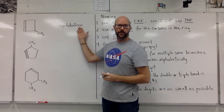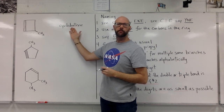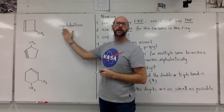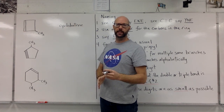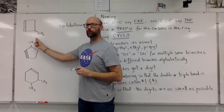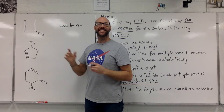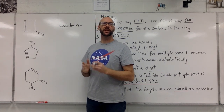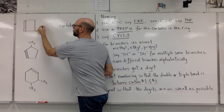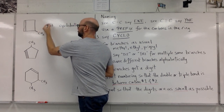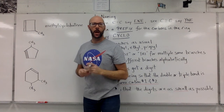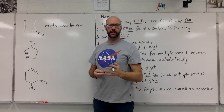That square with the double bond in it is cyclobutene — 'ene' because of the double bond, 'bute' because it's four carbons in the ring, and 'cyclo' because it makes a loop. Now this is a one-carbon branch: one is 'meth' and it's a branch, so this is methyl. Methyl cyclobutene.